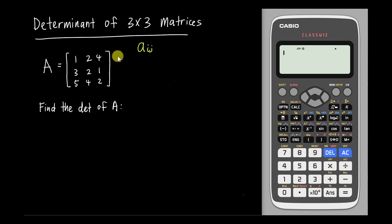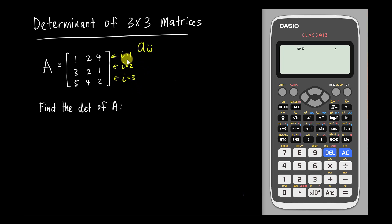So over here, I equals 1 because it's the first row. Over here, I equals 2 because it's the second row. And this one, I equals 3 because it's the third row. For columns: the first column has J equal to 1, the second column J equals 2, and the third column J equals 3.